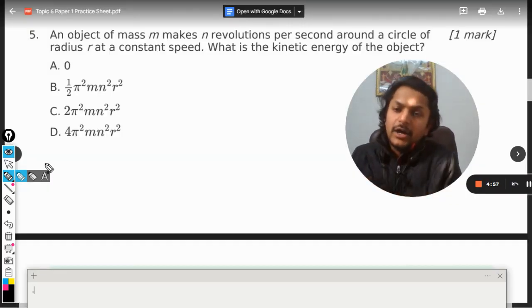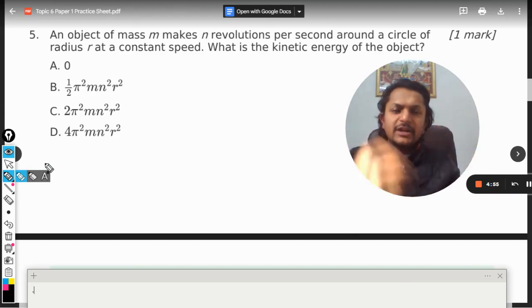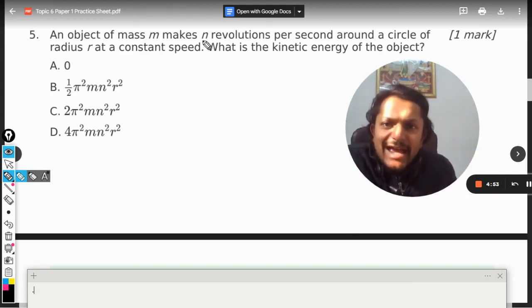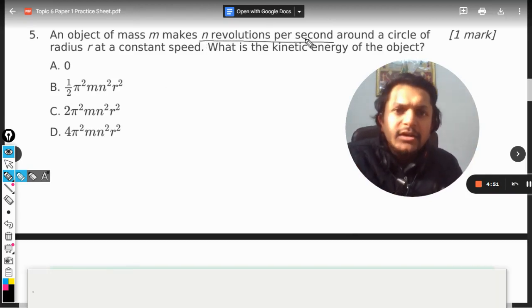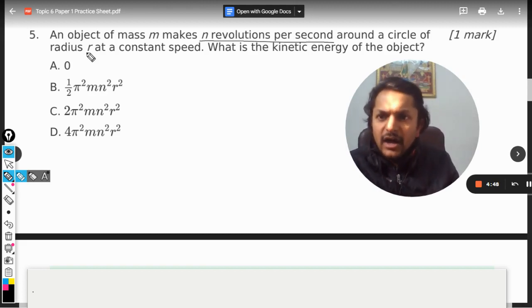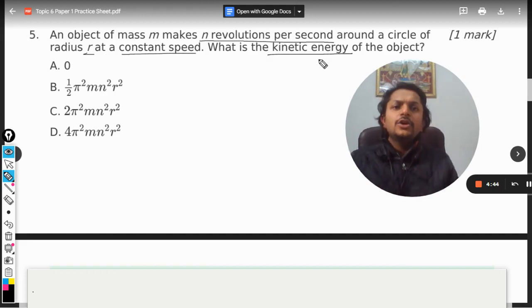Okay dear students, let us see how to do this question now. An object of mass m makes n revolutions per second around a circle of radius r at a constant speed. What is the kinetic energy of the object?